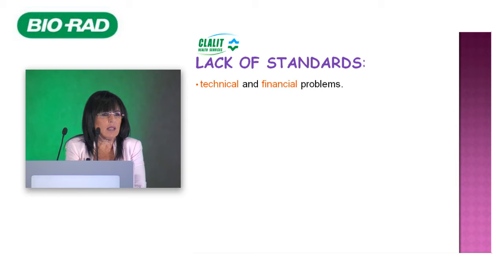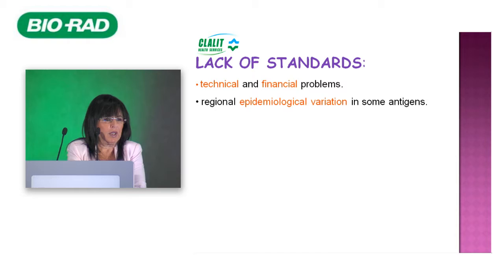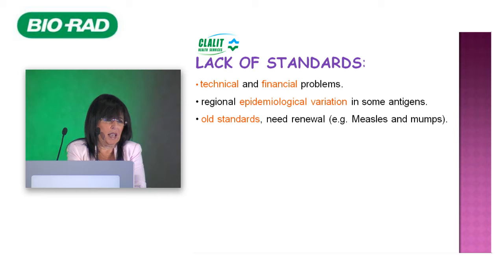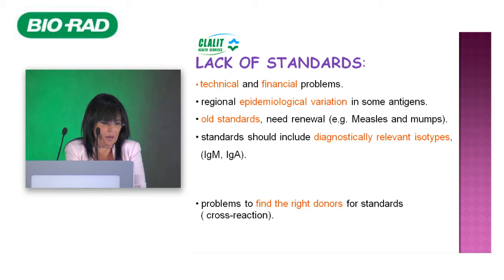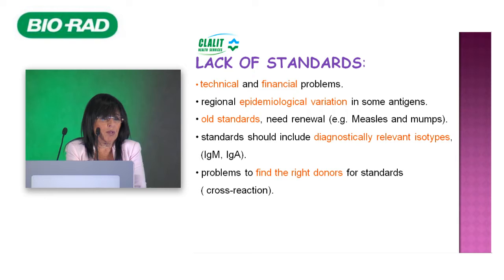From last year's Bio-Rad meeting, we know the challenges of lacking standards due to technical, financial, and regional epidemiological variation — a standard from one part of the world may not apply elsewhere. Old standards for diseases like measles and mumps need renewal. Standards should include diagnostically relevant isotypes, since a standard only for IgG has no context with IgM or IgA. Finding the right donors is also difficult due to cross-reactions — for example, CMV and EBV can cross-react, making a donor unsuitable for a standard.